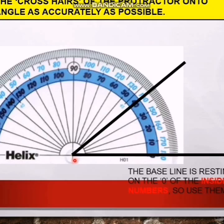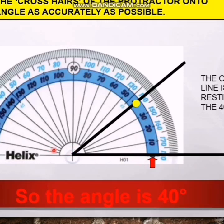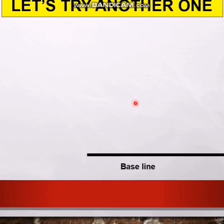The baseline is resting on the zero of the inside numbers. The other line is resting on 40, so the angle is 40 degrees. To measure an angle: first see where your baseline is — here it is at the inner scale zero — then find where the other line rests, which is at 40. So the angle is 40 degrees.